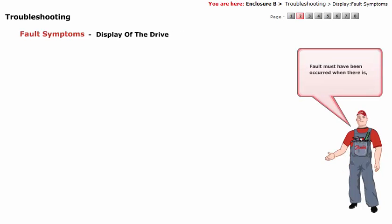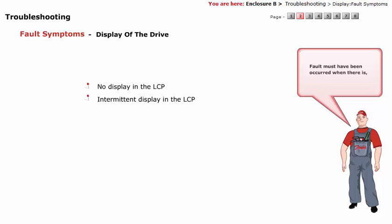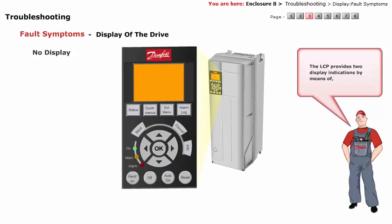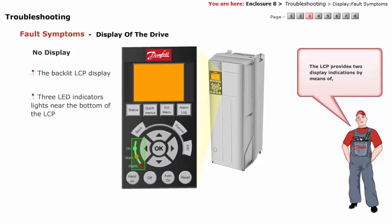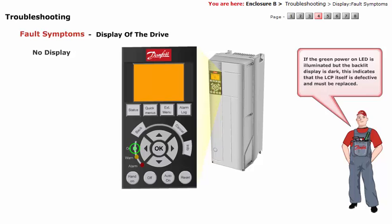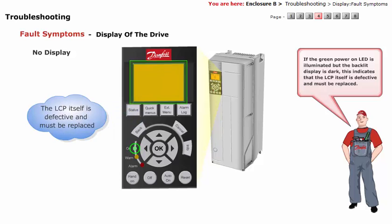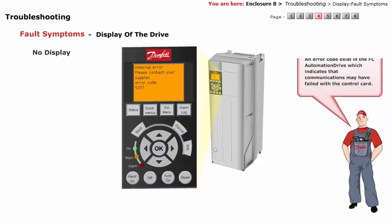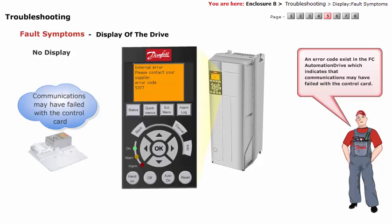A fault must have occurred when there is no display in the LCP, or there is an intermittent display. The LCP provides two display indications by means of the backlit LCP display and three LED indicator lights near the bottom of the LCP. If the green power-on LED is illuminated but the backlit display is dark, this indicates that the LCP itself is defective and must be replaced. It should be certain that the display is completely dark.